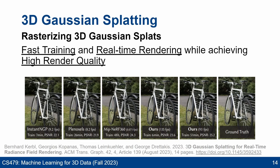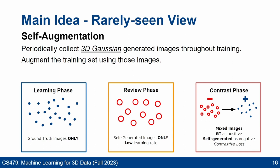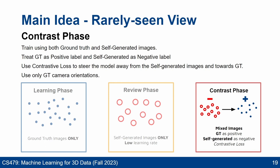There are still issues when rendering two specific kinds of views. First, views rarely seen during training end up looking distorted. Second, reflections appear foggy. To handle rarely seen views, we propose using self-augmentation to increase views seen during training. We split training into three phases: a regular learning phase with ground truth images, a novel view phase using generated images including unseen views trained with a lower learning rate, and a contrastive phase treating ground truth as positives and generated images as negatives. For reflective rendering, we propose adapting neural point catacaustics to separately render reflections using an additional 3D Gaussian. We also experiment with other optimizers such as SAM.